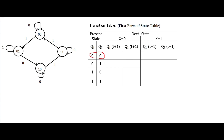We should not see the arrowhead — keep that in mind. The external input x equals 0, so when x equals 0, the state goes to 00. When x equals 1, the next state is 01. So when x equals 0, the same state 00 remains, and when x equals 1, the next state is 01.